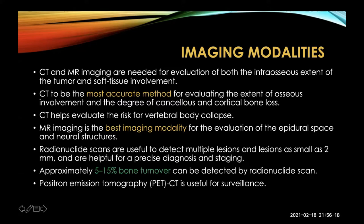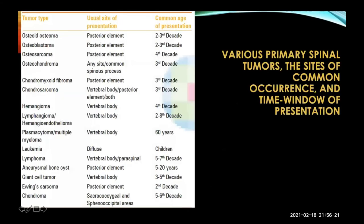Looking at this chart, these are the various types of tumors, where they present, and the common age of presentation. Osteoid osteoma is very common, usually in the posterior elements, occurring in the second to third decade. Osteochondroma can be anywhere but mostly in the spinous process. Chondrosarcoma is usually in the vertebral body in the third or fourth decade. Giant cell tumor happens mostly in the vertebral body in the third to fifth decade. All these tumors occur at different sites in the spine — posterior elements, anterior elements, or the neural arch — and they present at very different ages, which is key to radiological diagnosis.